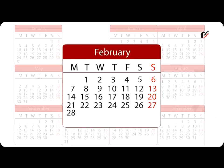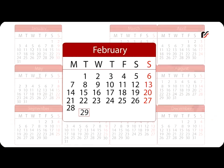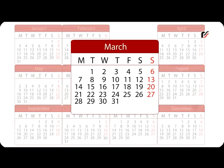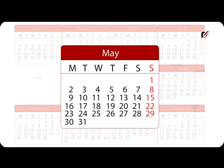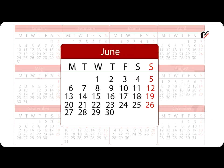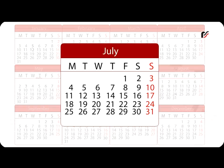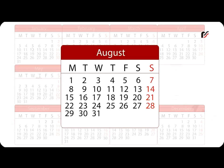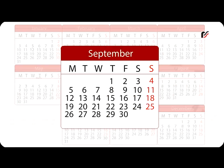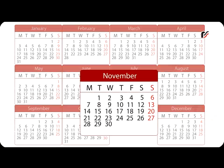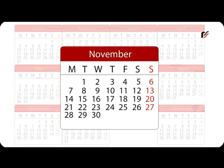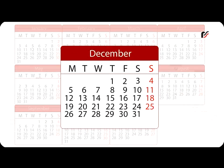February has 28 days; in a leap year it has 29 days. March has 31 days, April has 30 days, May has 31 days, June has 30 days, July has 31 days, August has 31 days, September has 30 days, October has 31 days, November has 30 days, and December has 31 days.